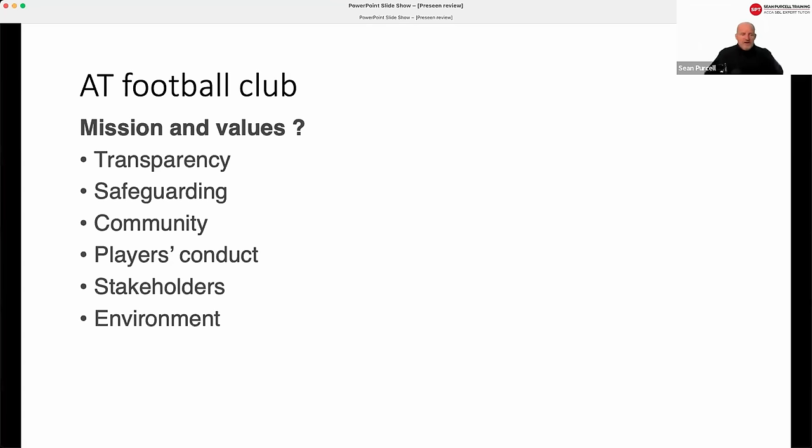The stadium is old. It's inefficient. They talk about being green. I think it's impossible to be green in a knackered old stadium. So the running costs of a knackered old stadium are probably pretty high. So some of what they currently have goes against their mission. They gave a mission of transparency, safeguarding, community players conduct. Could you develop KPIs for each of those values? You might be asked to. Give me a pro forma. No, it doesn't work like that. You need to think about what you might do.